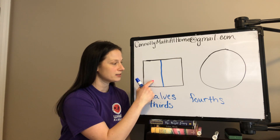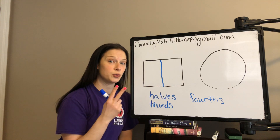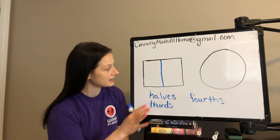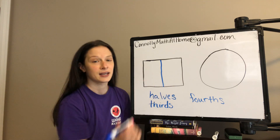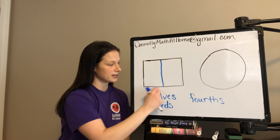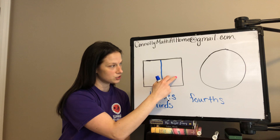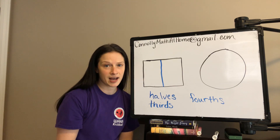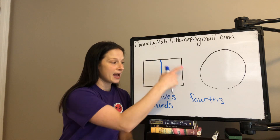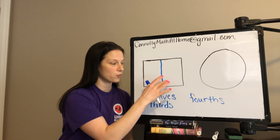Let's count them: one, two. So when we're thinking about halves, we have two pieces that are identical — they are equal, the same size of a whole. Inside this one whole rectangle, I cut it into two pieces: one, two, and we call those halves. So when I think about how many halves are in one whole, two halves make up one whole.